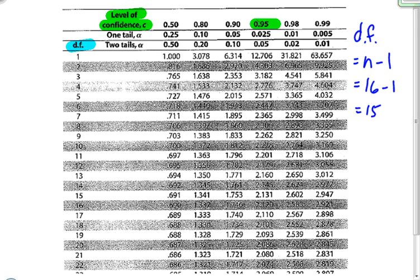The degrees of freedom can be found over here on the left. And if I come down to 15, that means that I am looking for 15 degrees of freedom along with a 95% confidence level. And that takes me to this number right here, which is 2.131. So in this case, my T is 2.131.